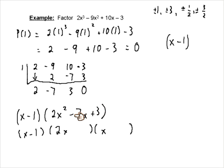And I know to get positive 3, I need both numbers to be negative, because I'm going to need a negative here. So it has to be negative 3 and negative 1.